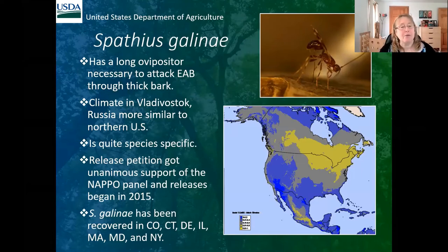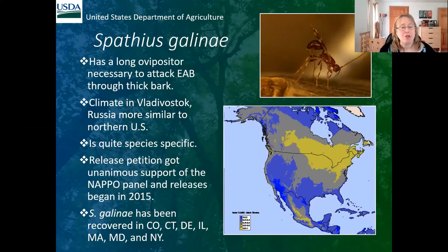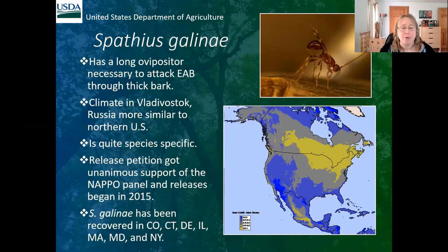Spathius galinae was collected from Russia and has a long ovipositor. Climate matching shows that the climate in Vladivostok, Russia is much more similar to the northern United States, which is where we need this to work. It is also quite species-specific, and we got unanimous support for a release permit. We have now recovered this species from seven states, so it is in fact doing much better than Spathius agrili was in the north.